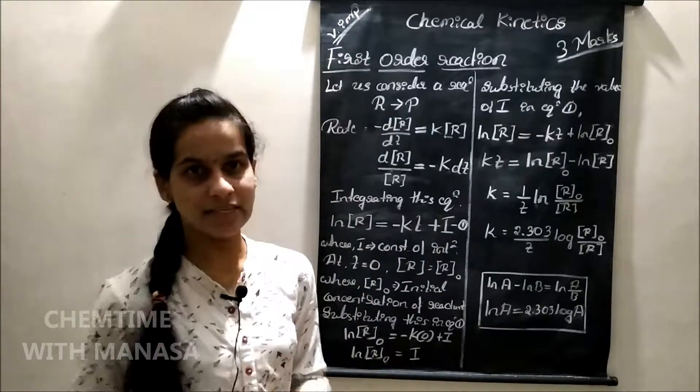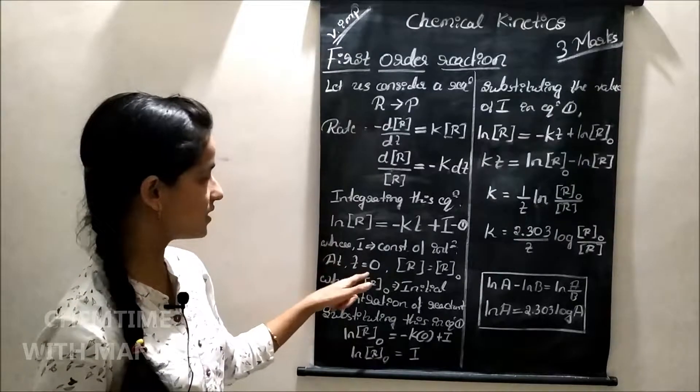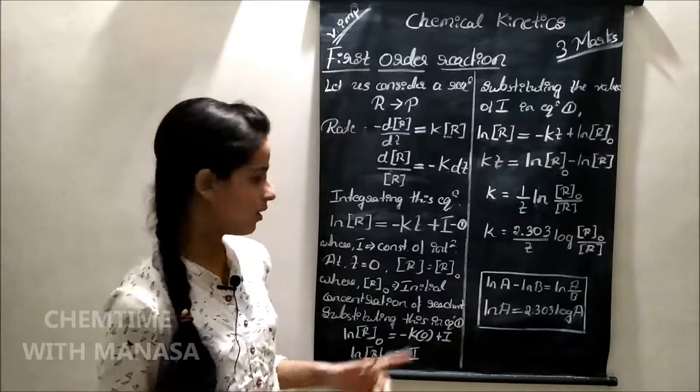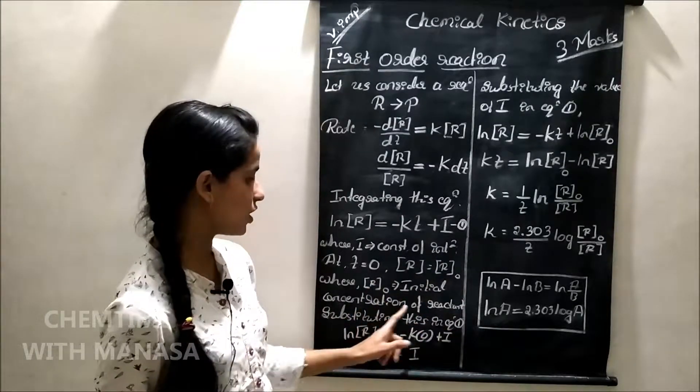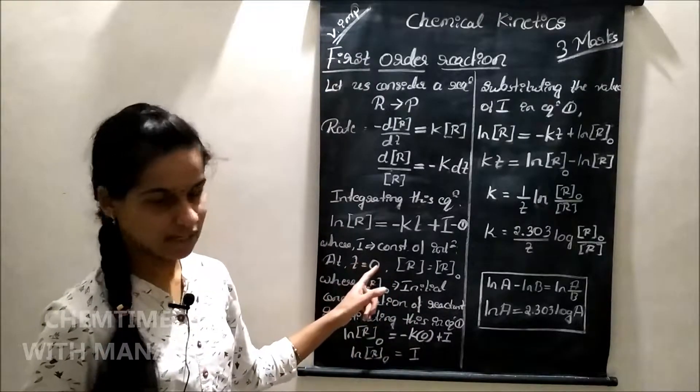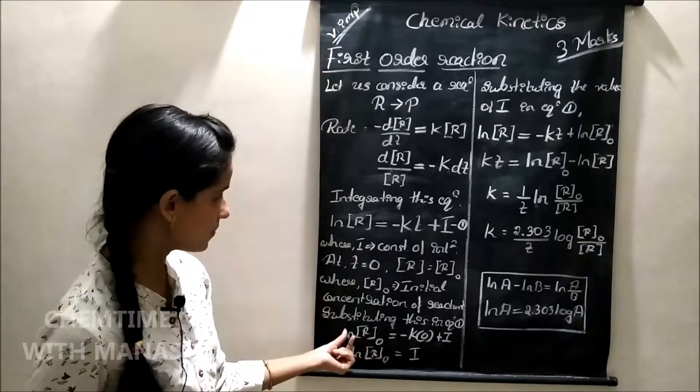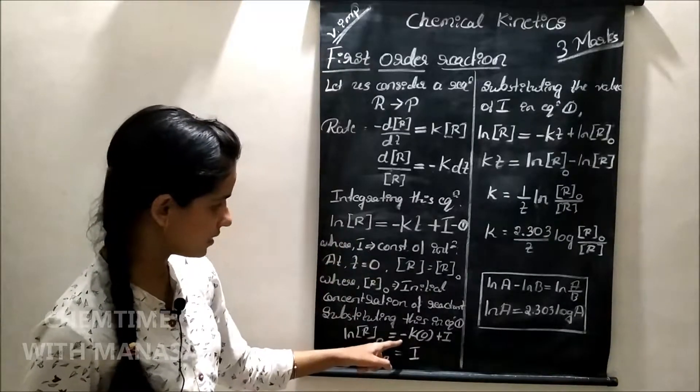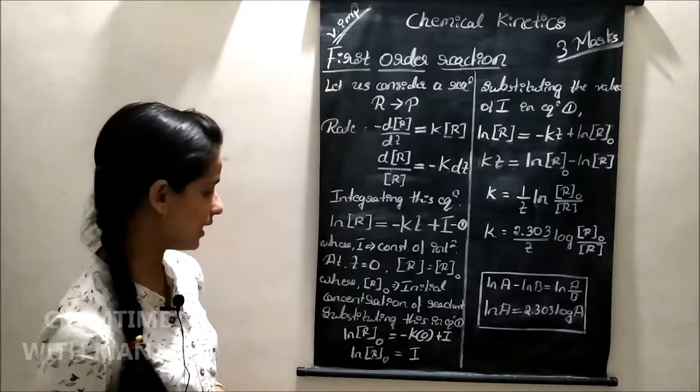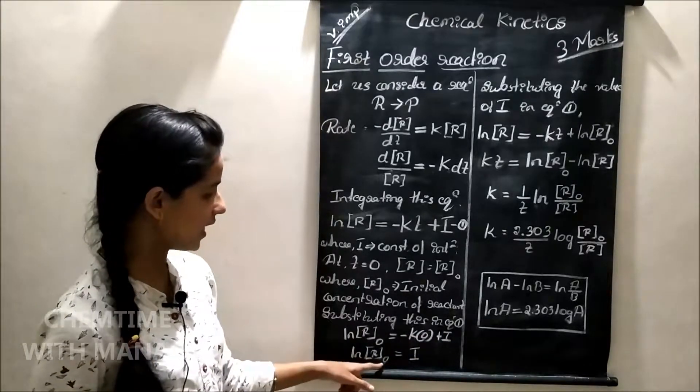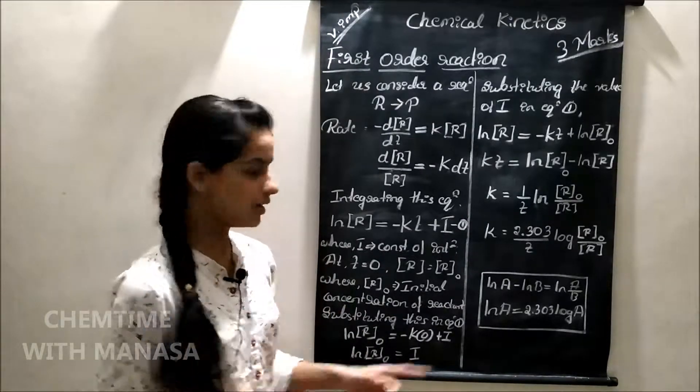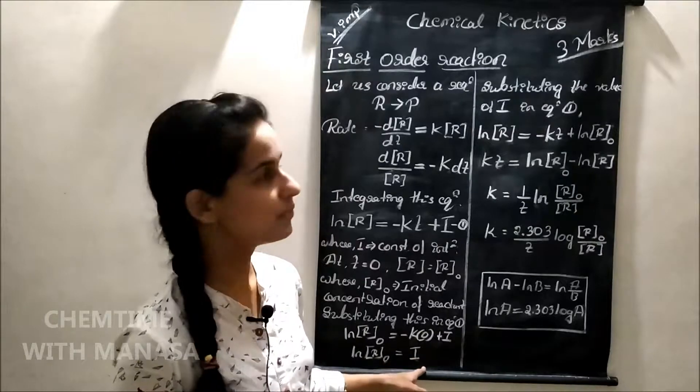Then, let us consider the initial condition. At T is equal to 0, concentration of R is equal to R naught, where R naught is the initial concentration of the reactant. Substituting this initial condition in equation number 1, we get ln R naught is equal to minus K into 0 plus integration constant i. Ln R naught is equal to i. By applying the initial condition, we get the value of constant of integration i.